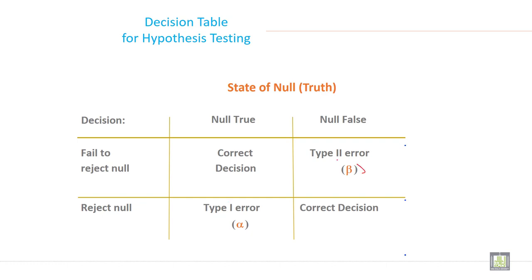So this alpha and beta is important. And out of these two, beta is more dangerous because you are accepting the wrong things.